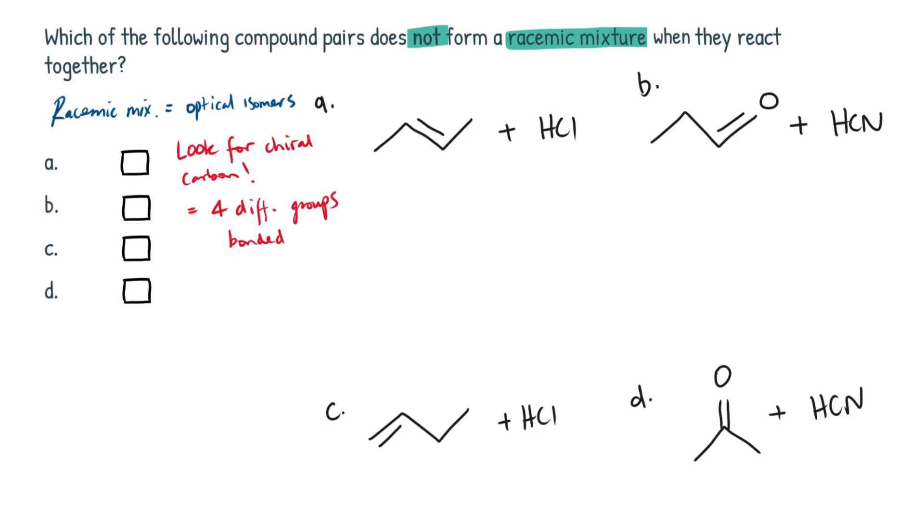So I'm going to go through these compound pairs one by one, breaking down what they are, so what is their functional group, what mechanism will take place when you react with this reagent, and whether a chiral carbon is present or not. So let's start with this first one.